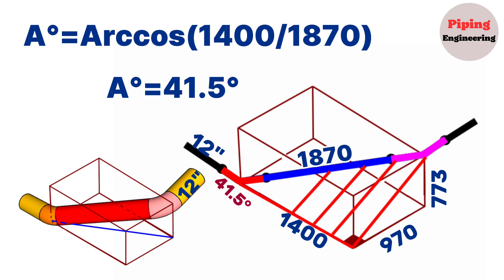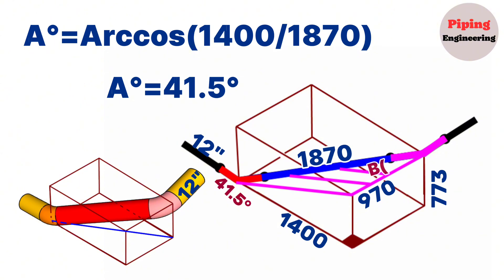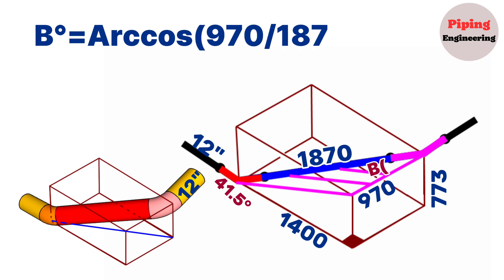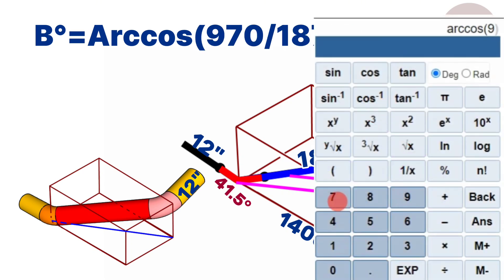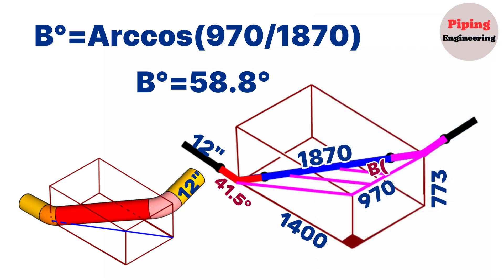Using the same method we calculate the above pink color elbow degree. In the pink right triangle, the adjacent side is 970mm and the hypotenuse is 1870mm. Marking the elbow degree as B, according to the trigonometric function, B equals arc cosine of 970 divided by 1870. Using the scientific calculator, we find B equals approximately 58.8 degrees.